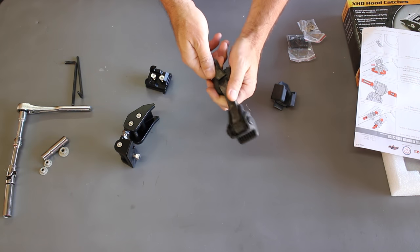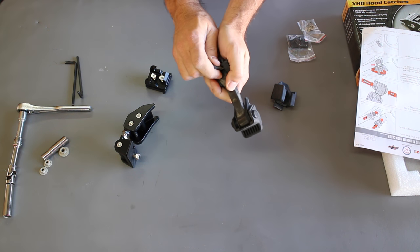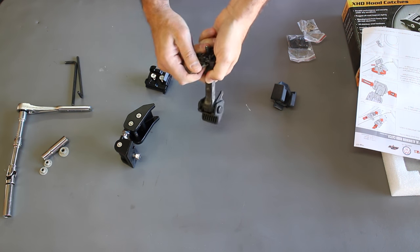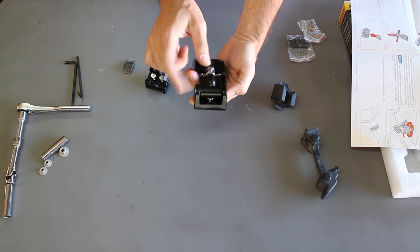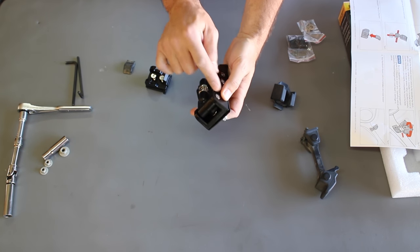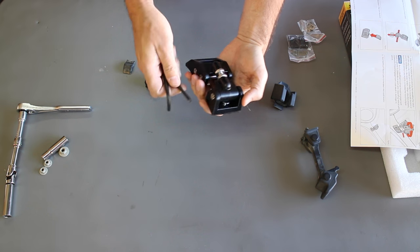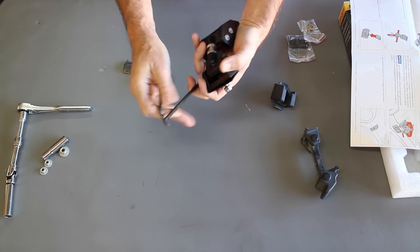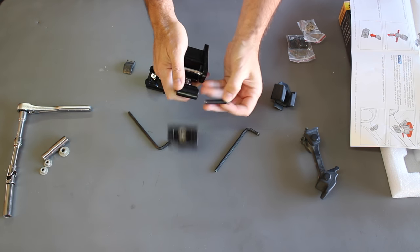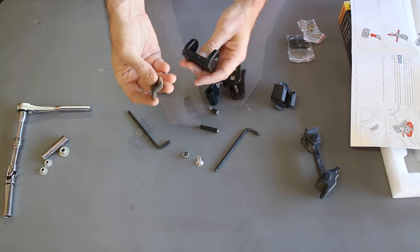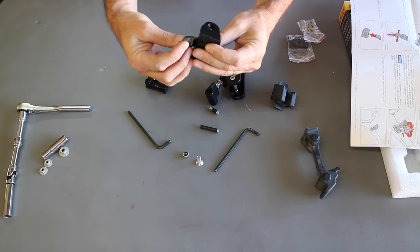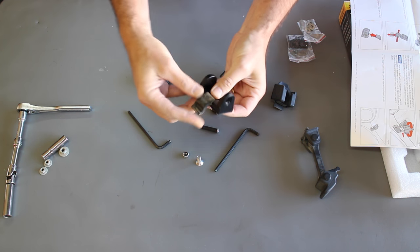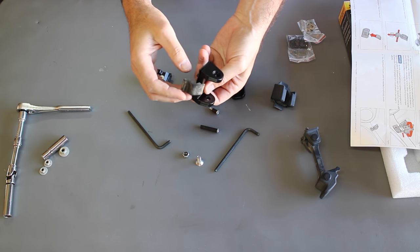Alright, next we've got to remove this little rubber bumper from the hood latch, and I think it just pulls right off. There we go. And then we've got to remove this hood latch assembly, and there's two 5mm nuts in there, we've just got to pull those off. Thankfully, I had two 5mm. And then that bumper that we just took off is going to go right on here. Just like that.